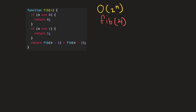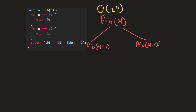So we end up at the return statement, and what this return does is it adds together the result of two more calls to the Fibonacci function. This first Fibonacci call uses n minus one, so four minus one — which is just three. And this second one uses n minus two, so four minus two — which is just two.